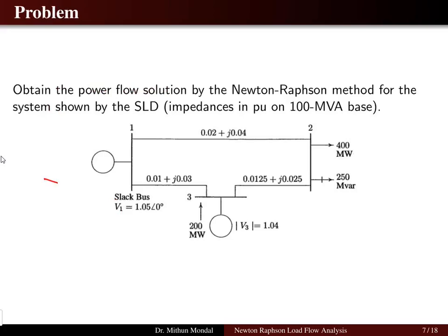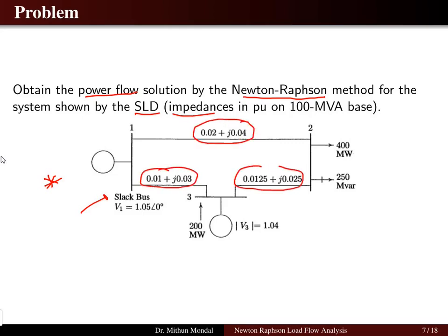Now let us see a problem. This is the same problem solved using the Gauss-Seidel method, but now we solve it using Newton-Raphson to obtain the power flow solution. The single-line diagram shows impedance values connecting the various buses in per unit. The base power is 100 MVA. There are three buses: bus 1 is a generator bus, and bus 2 is a load bus (PQ bus).